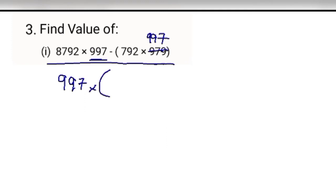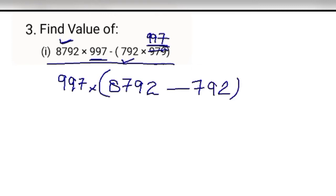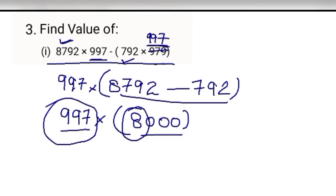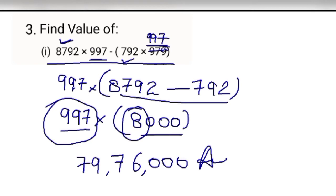What is remaining? 8792 minus 792 — after taking 997 common, what remains is 792. So it becomes 997 multiply 8000. Now multiply: 8 sevens are 56, 8 nines are 72, carry gives 77, then 79 — with three zeros. The answer is 7,976,000.